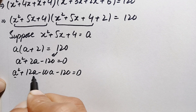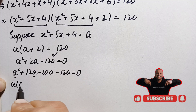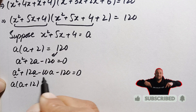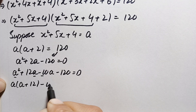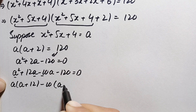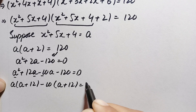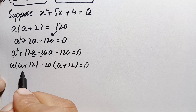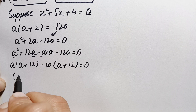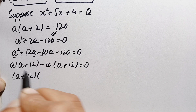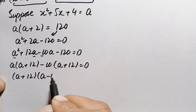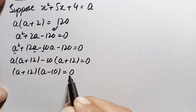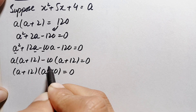In the first two terms, a is common, so factoring gives a(a+12). In the last two terms, −10 is common, giving −10(a+12) = 0. Taking (a+12) common: (a+12)(a−10) = 0.